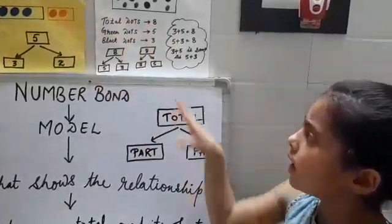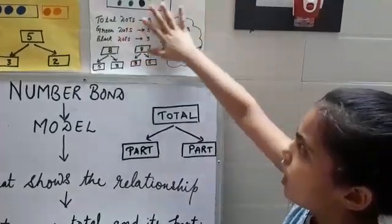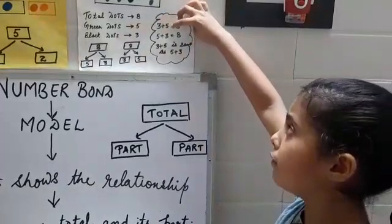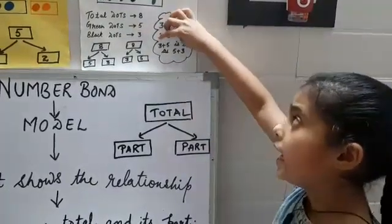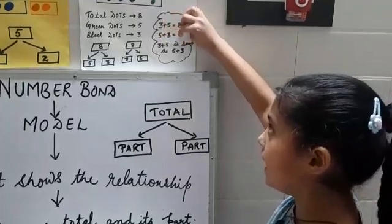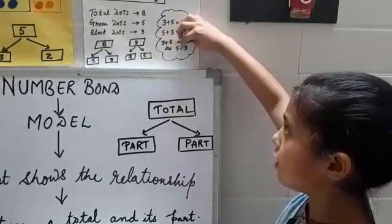If you write five and three, you can also write three and five. Three plus five equals eight. Five plus three equals eight. Three plus five is the same as five plus three.